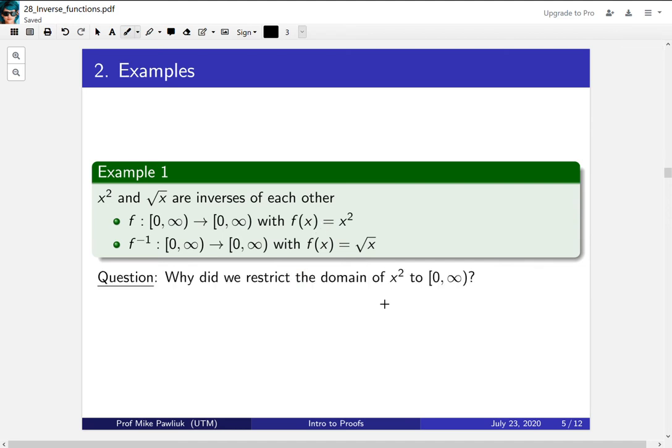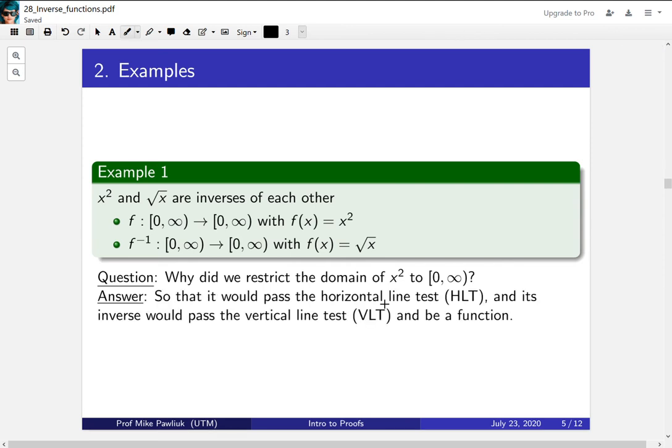So the question is, why did we restrict the domain of x squared to just [0,∞)? Couldn't we have just taken the whole domain of the reals? Well, we did this so that our function would pass the horizontal line test. And we did that because we wanted its inverse to pass the vertical line test and be a function. So in order to do that, we had to restrict the domain of x squared here.